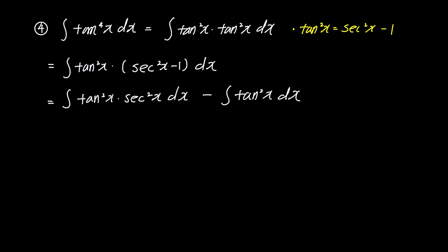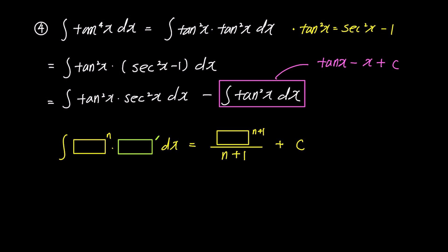The second integral is already familiar from the earlier solution: tan x - x + c. For the first integral, we bring back the box rule formula. In the yellow box we put tan x and the exponent n becomes 2. The green box prime should have sec²x, the derivative of the yellow box. For the right yellow box, we put tan x again, and the answer is tan³x over 3 plus c.